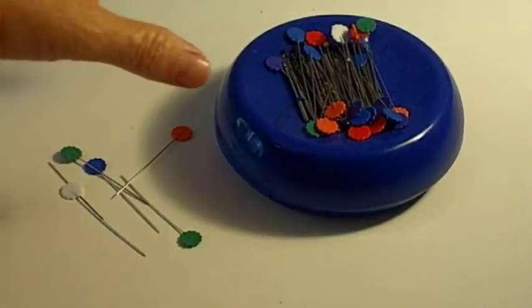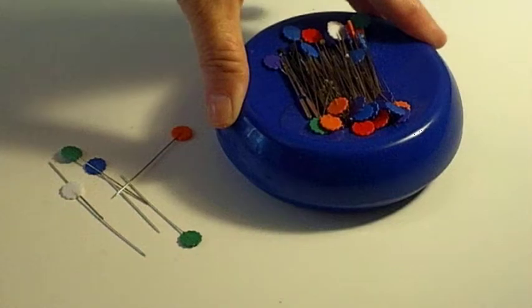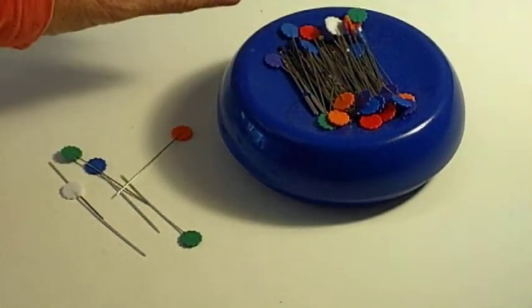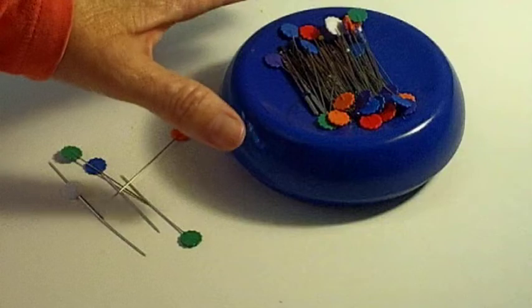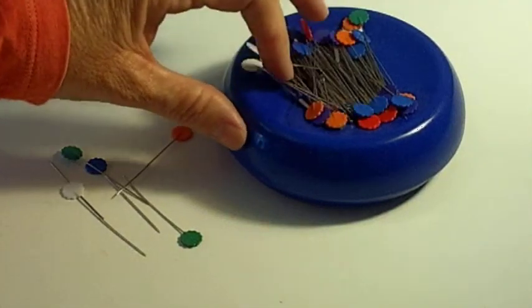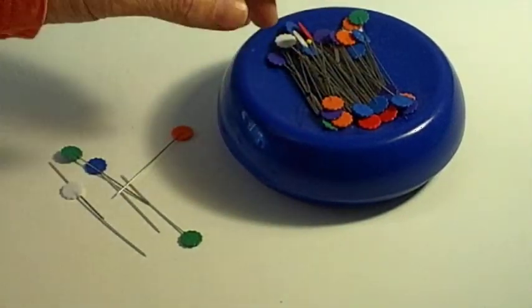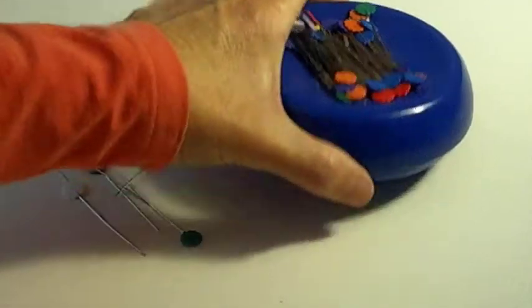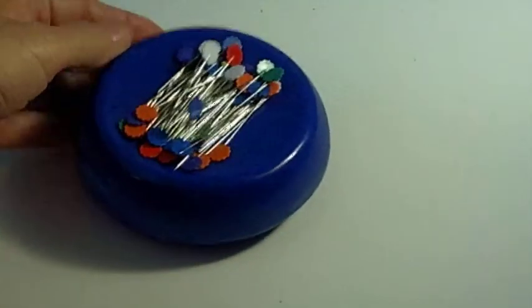Another must have for me is a magnetic pin holder. I just really rather use this than a pin cushion. It keeps your pins all in one place. You don't have to worry about them falling off. When you're done with a project you can take the pin holder and scan the floor around you and make sure that you've gotten all your pins. It's especially good if you have little ones.